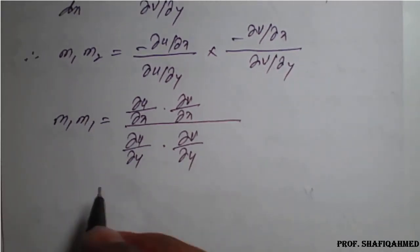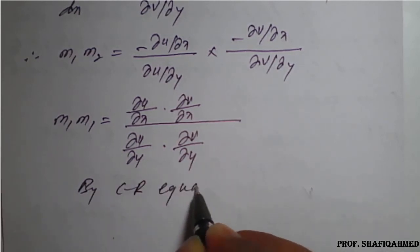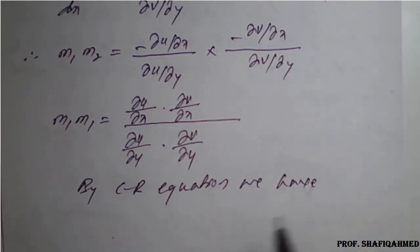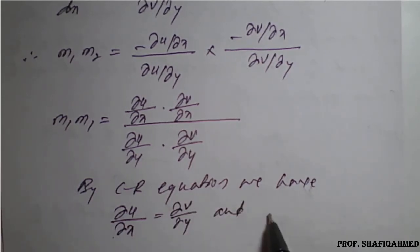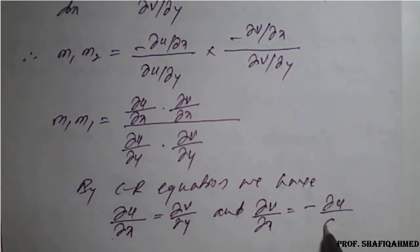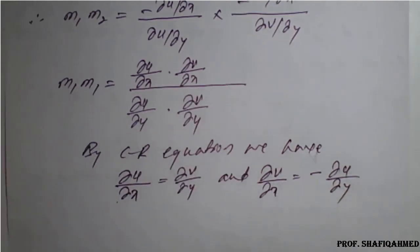To simplify this, we take the help of the Cauchy-Riemann (CR) equations. By the CR equations, we have ∂u/∂x = ∂v/∂y and ∂v/∂x = −∂u/∂y. We will apply these substitutions now.